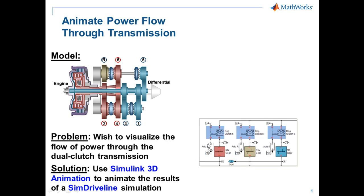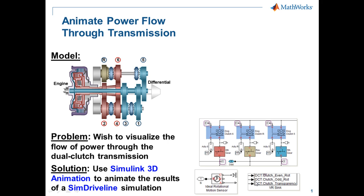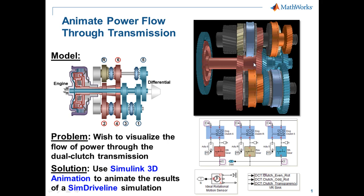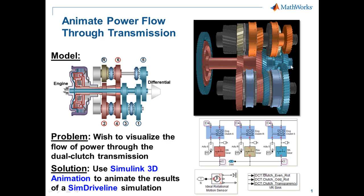Our SimDriveline model contains gears, dog clutches, and the input clutches that control the shifting of gears in the transmission. We're going to send the simulation data to Simulink 3D Animation to produce a 3D animation where you can see that the flow of power is highlighted in orange as the transmission shifts gears. I'll now switch over to the model so that you can see how this is done.